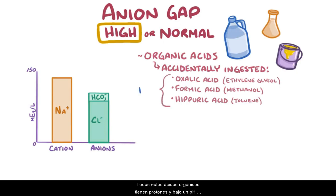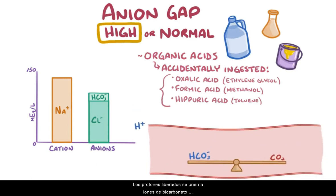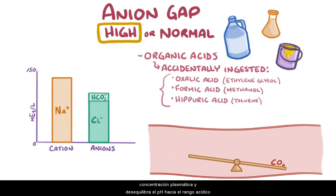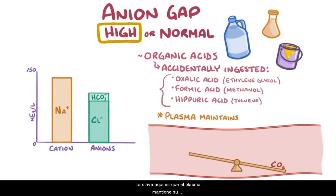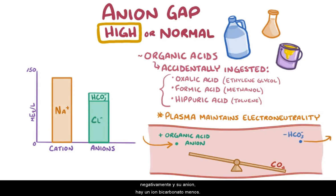All of these organic acids have protons, and at a physiologic pH they dissociate into protons and the corresponding organic acid anions. The released protons attach to bicarbonate ions floating around, which decreases its plasma concentration and shifts the pH towards the acidic range. The key here is that the plasma maintains its electroneutrality, because for each new negatively charged organic acid anion, there is one less bicarbonate ion. Because the organic acid anions are not part of the anion gap equation, the anion gap will be high.